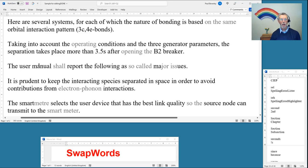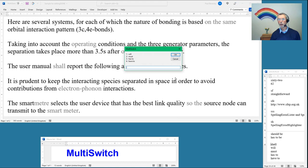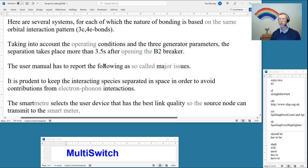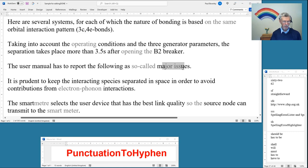The user manual shall, we get these shalls in some of the stuff I work on. So we're using multi-switch again. I think has to, number three here we go, has to report the following as so-called major. Okay, so that wants to be hyphenated, so-called, and I think this should have single quotes around it.